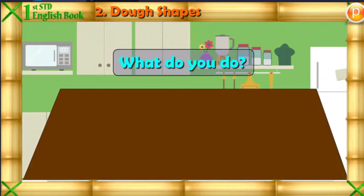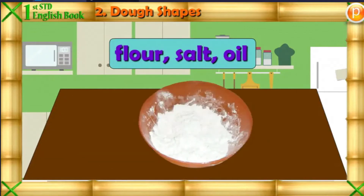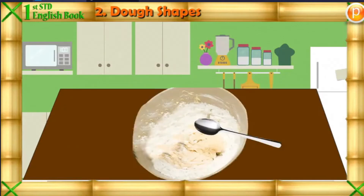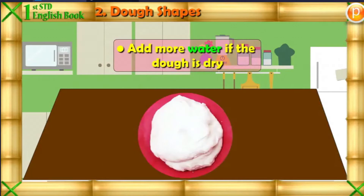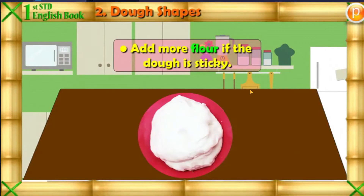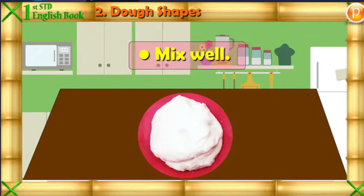What do you do? Put the flour, the salt and the oil in a bowl. Add half cup of water and mix well with a spoon. Add more water if the dough is dry. Add more flour if the dough is sticky. Mix well. Soon your dough will be ready.